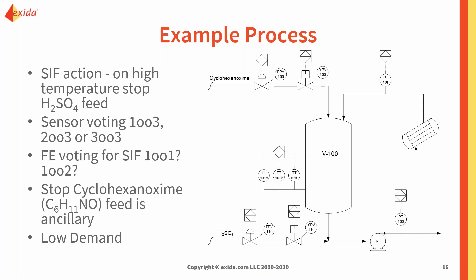Here's an example process — an intermediate reaction for the production of Nylon-6, simplified in this diagram. Our goal is to stop the reaction on high temperature. We have two streams feeding in: cyclohexanoxime at the top and sulfuric acid at the bottom. Our initial definition of the safe state is stopping the sulfuric acid feed. We have three temperature transmitters, but one question we'll ask is whether we really need three to meet our SIL target, or if we can do it with fewer.